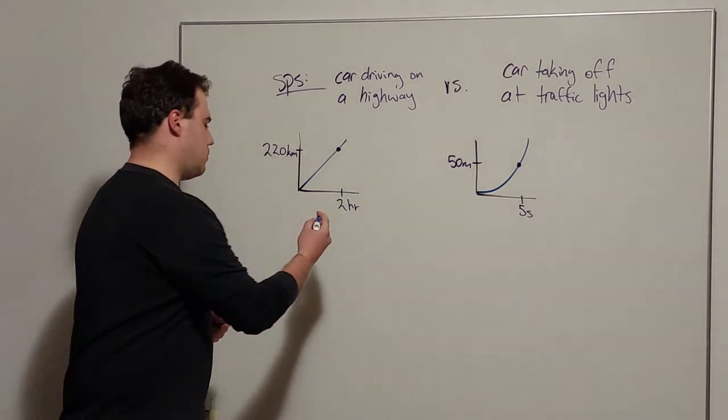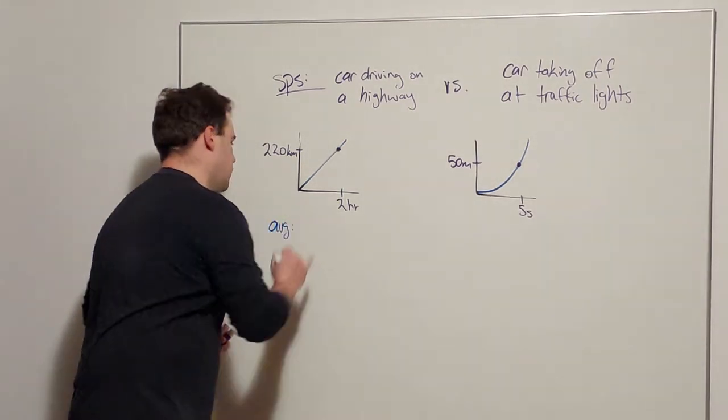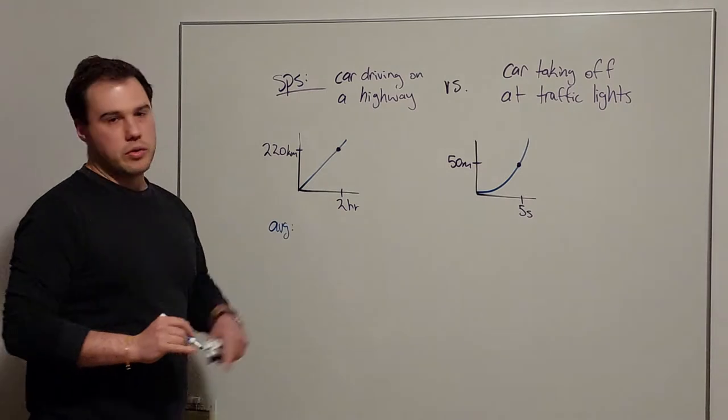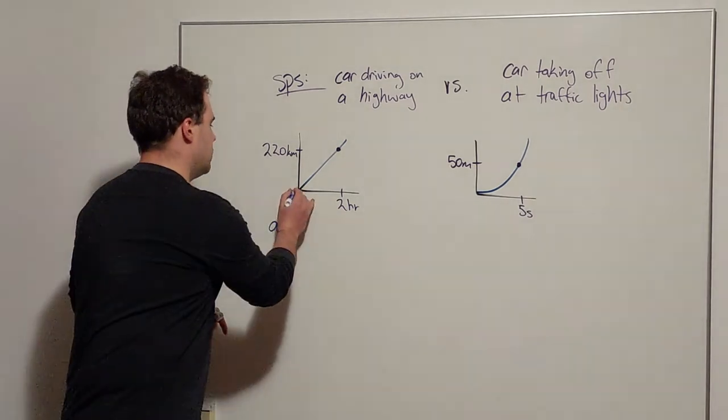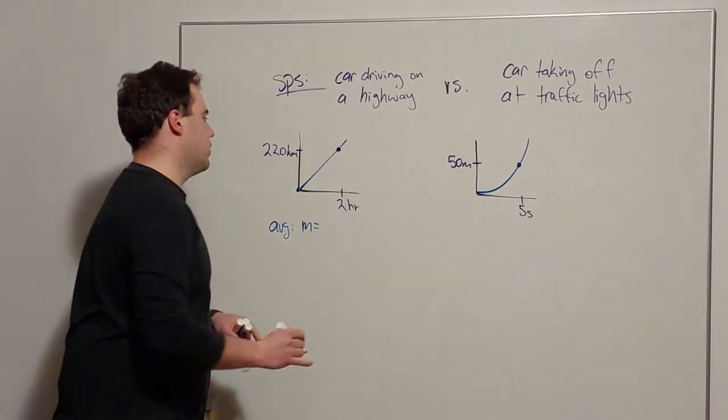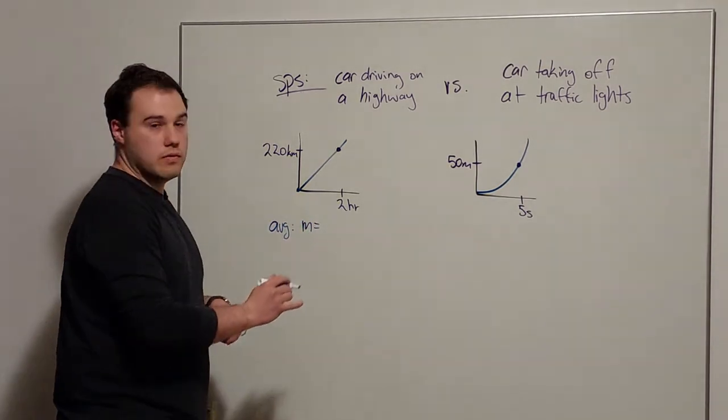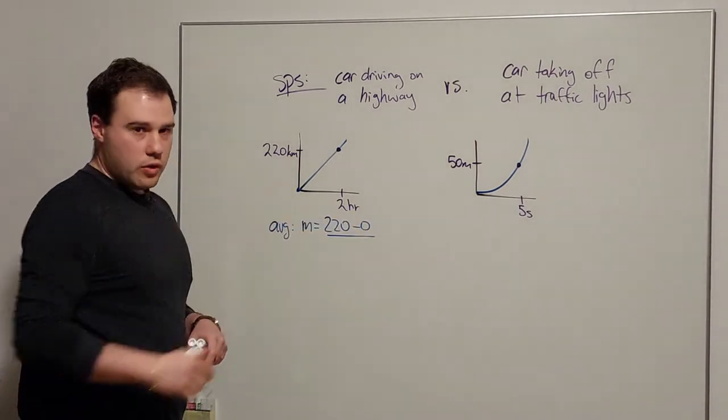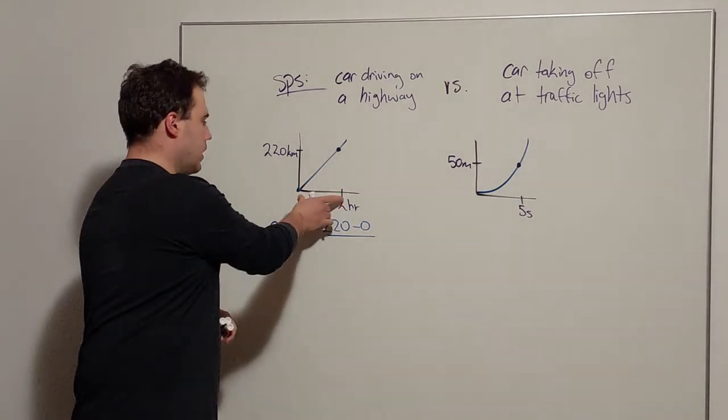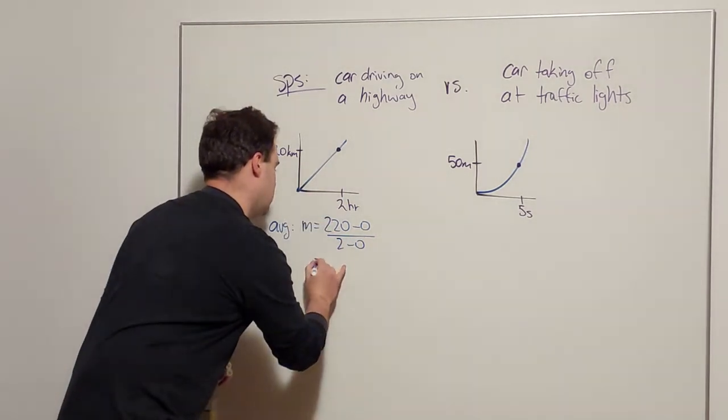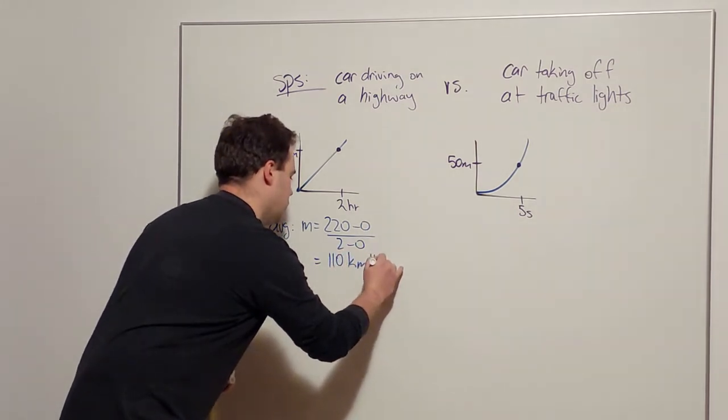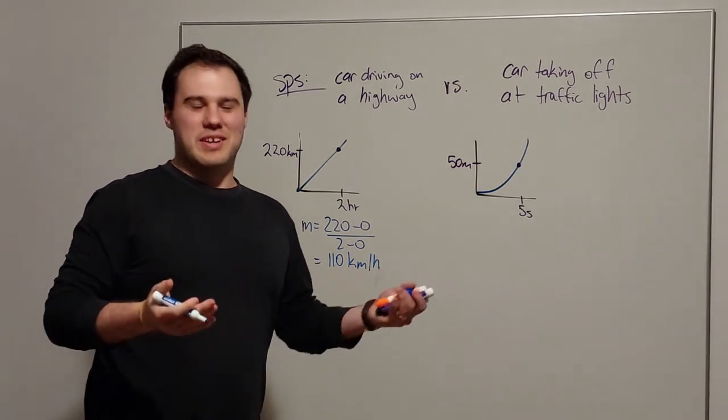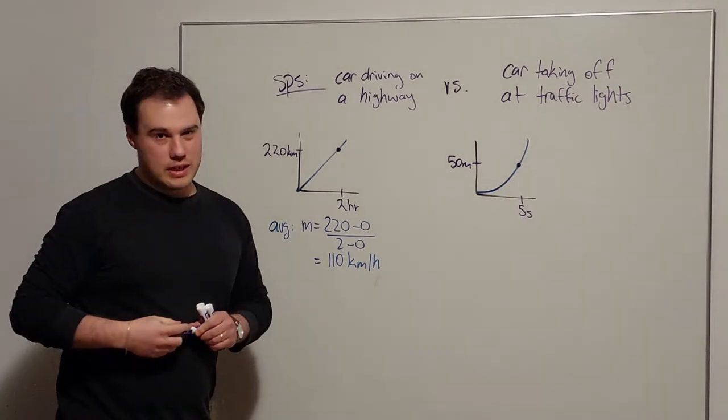So for the first one, the average speed is going to be the slope or the gradient of this line. From the origin we've got that the gradient here will be the vertical difference, the rise, will be 220 minus 0 over the run or the horizontal change, will be 2 minus 0. And lo and behold, that aligns with what I said about it traveling at a constant speed and the speed being 110 k's an hour.